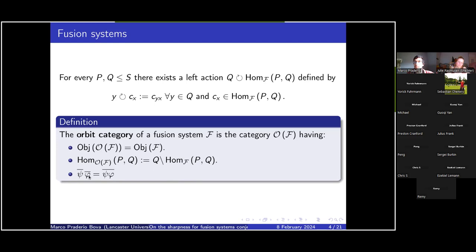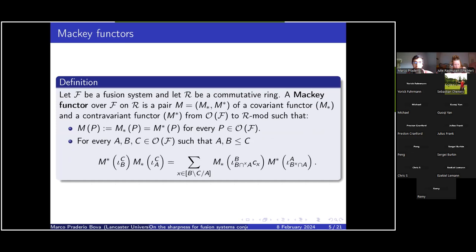So for a fusion system F, we define the orbit category as the category whose objects are the subgroups of S — the p-group S — and whose morphisms are the equivalence classes of morphisms in F quotiented by this action. For every hom-set we have a different action giving different equivalence relations. Composition of two equivalence classes is the equivalence class of the composition. Okay, any questions so far?